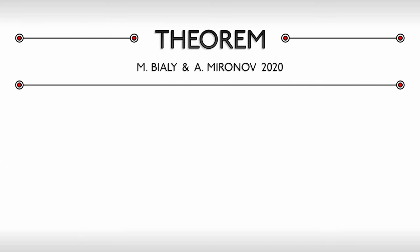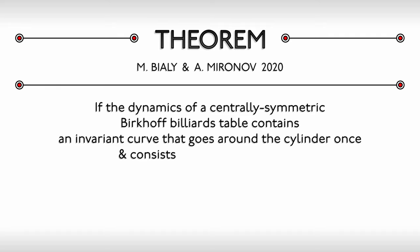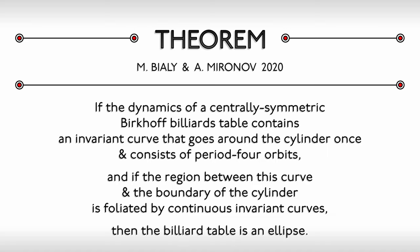Here's the statement. If the dynamics of a centrally symmetric Berkhoff billiards table contains an invariant curve that goes around the cylinder once and consists of period four orbits, and if the region between this curve and the boundary of the cylinder is foliated by continuous invariant curves, then the billiard table is elliptic.